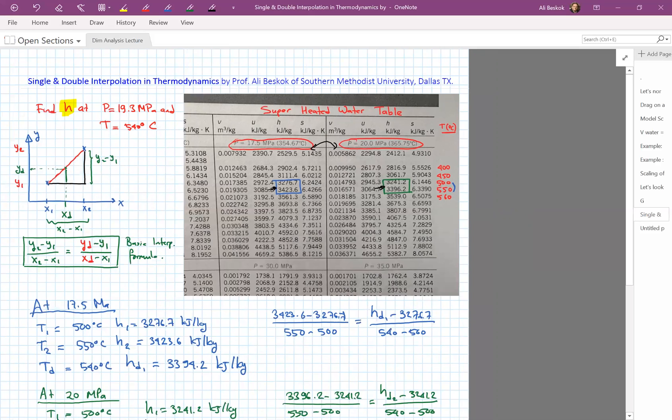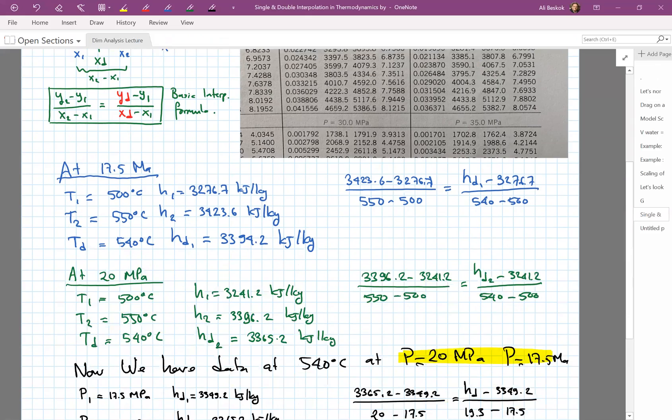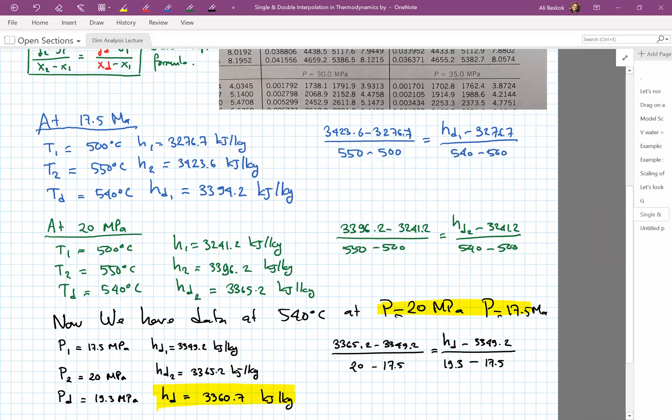Nevertheless, I truly hope that this small demo will show you how to do double interpolation. Looking at it, at 17.5 MPa the enthalpy is 3394 and at 20 MPa it's 3365. I'm very close to it at 19.3 MPa, so it just makes sense. I hope you enjoyed this discussion and hopefully everything goes well for you in thermodynamics. That's it.